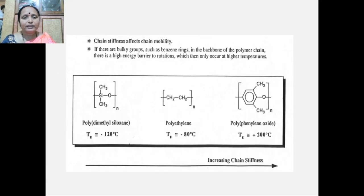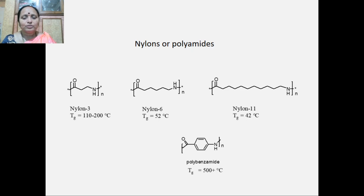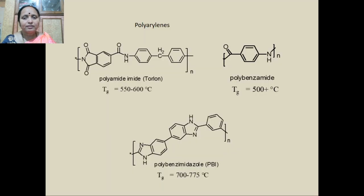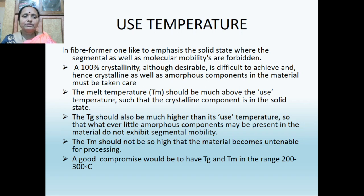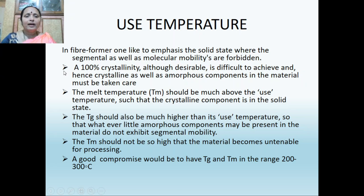We consider chain branching versus linear chains — linear molecules increase chain thickness. For fiber-forming materials, one likes to emphasize the solid state wherein segmental as well as molecular mobility are forbidden. One hundred percent crystallinity, although desirable in fibers, is difficult to achieve, and hence both crystalline and amorphous components in the material can be present.